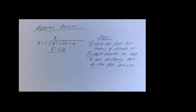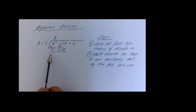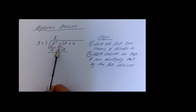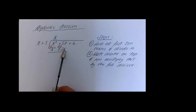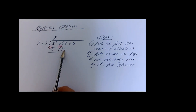Step three: subtract and get the remainder. If you had originally got a negative here, that would change the sign — subtracting a negative is like adding. You can think of it as subtracting, or just change the signs. Since all terms are positive here, when we subtract they change to minus.